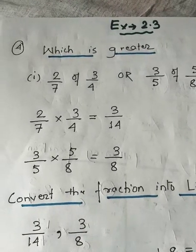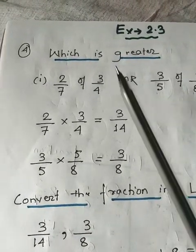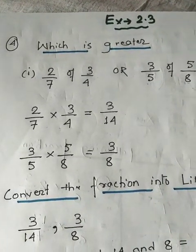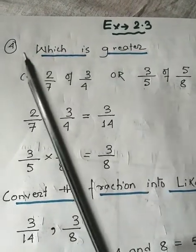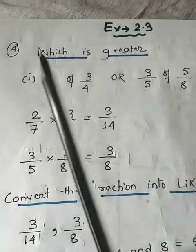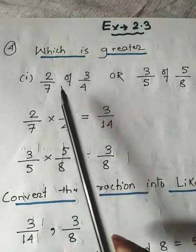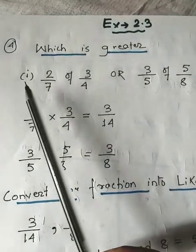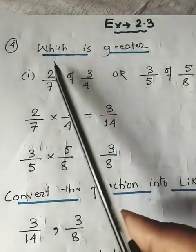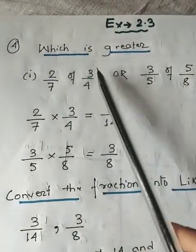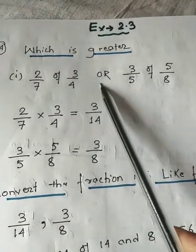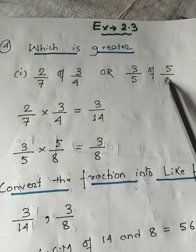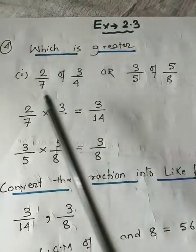Students, today we will understand question number 4, sum number 1 of exercise 2.3. In this question we have to compare the fractions. Let's see: is 2/7 of 3/4 greater, or is 3/5 of 5/8 greater? We have to compare these two.